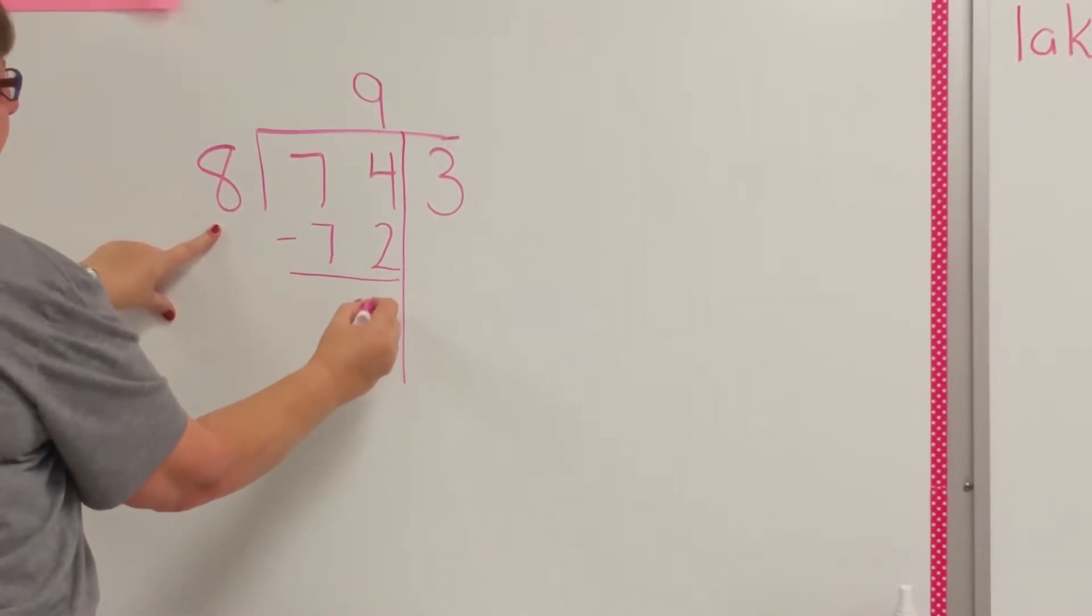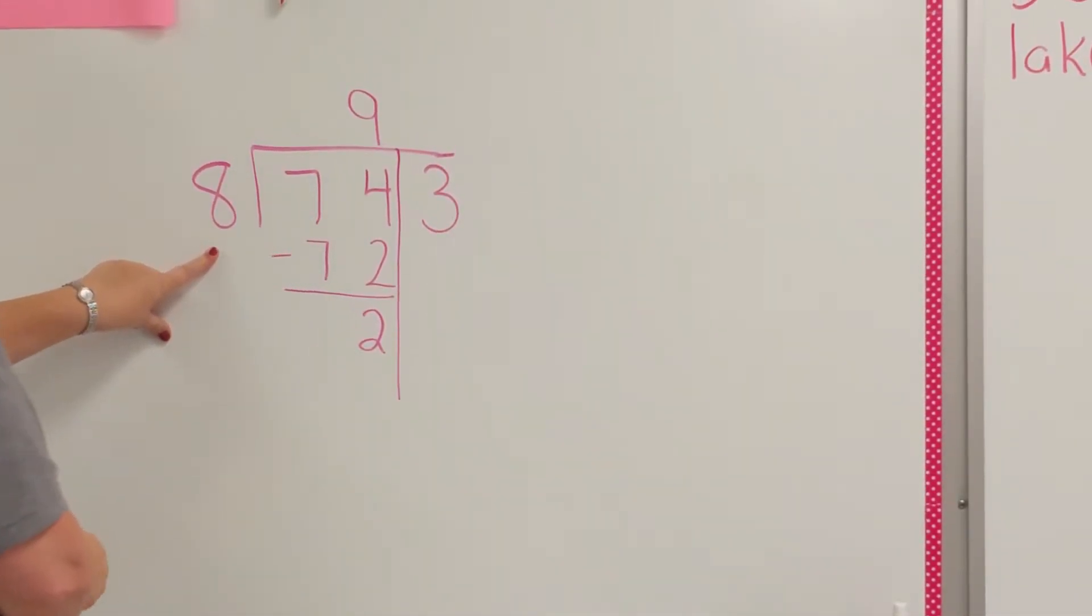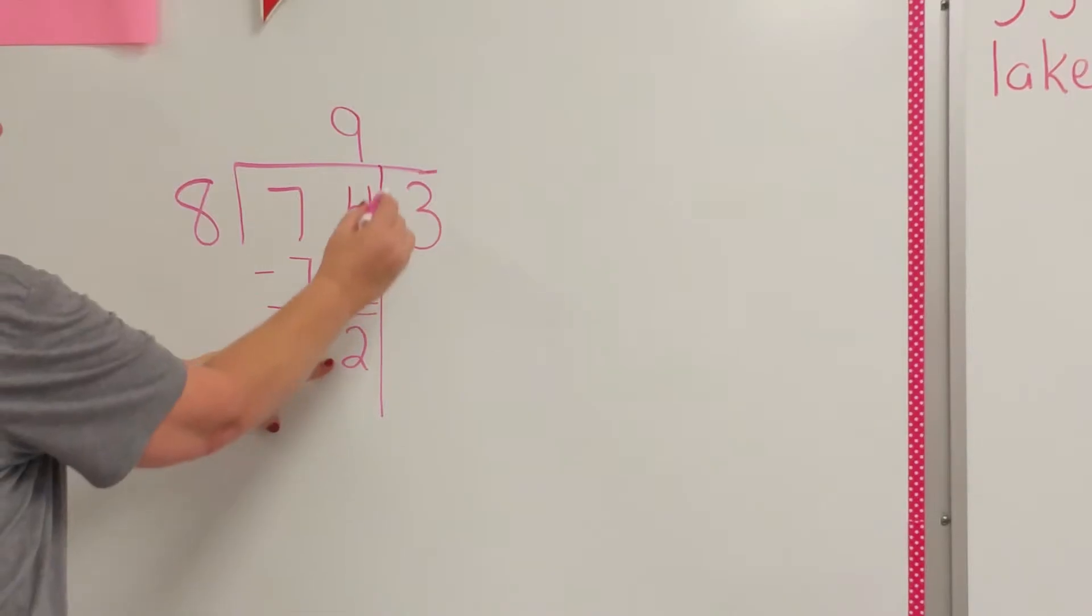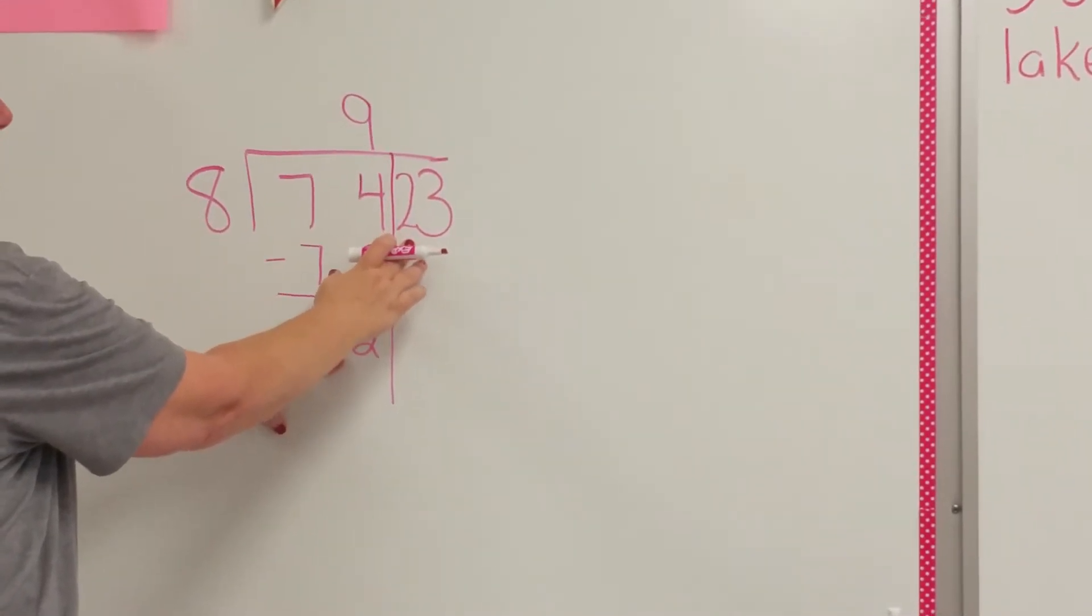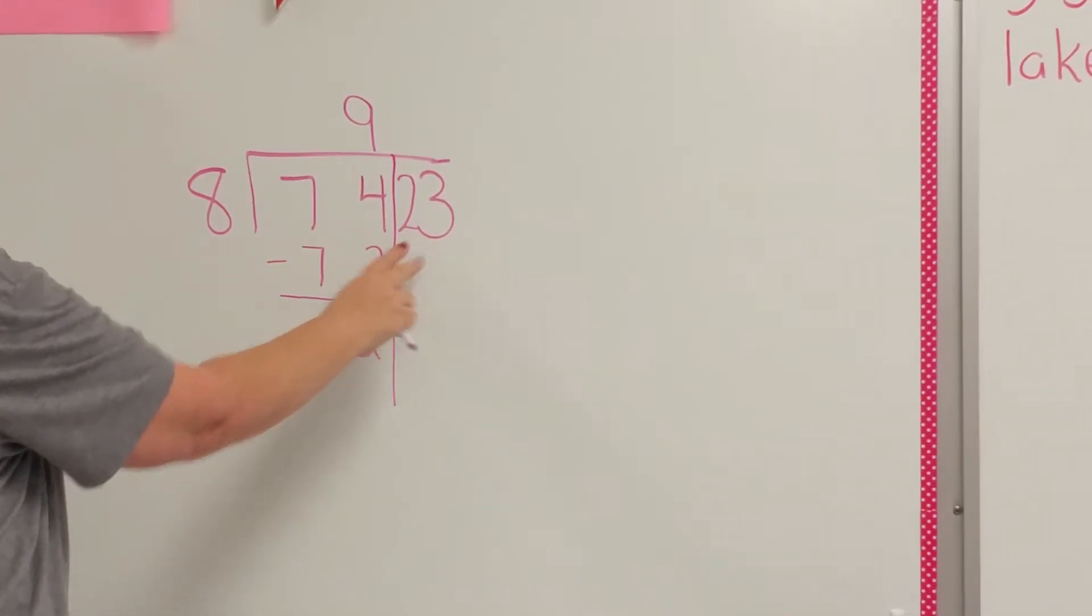I subtract that from 74 and I have a remainder of 2. I'm going to carry this remainder in the tens place to the 1. So I brought over two groups of 10. So now I have 23.